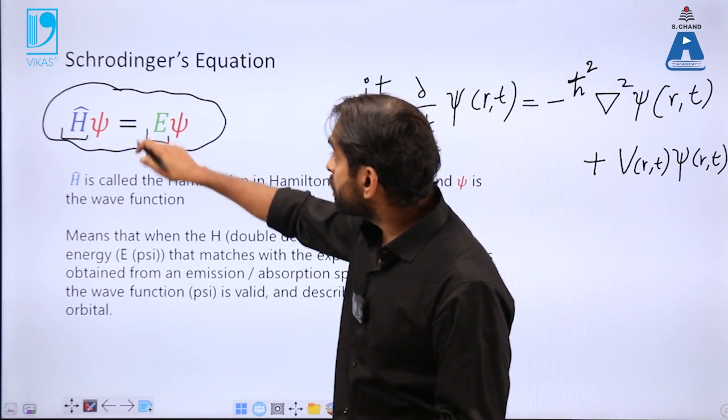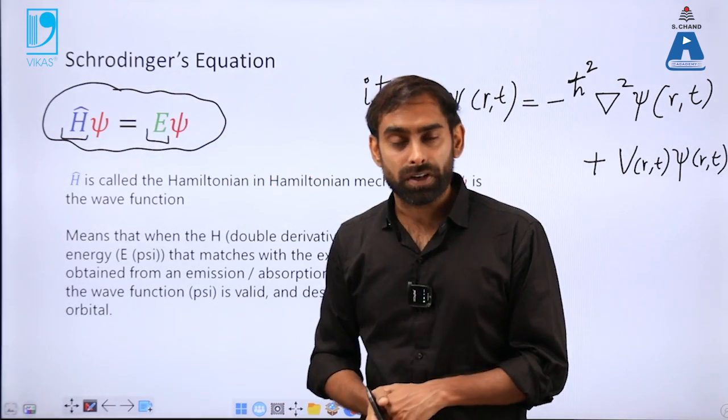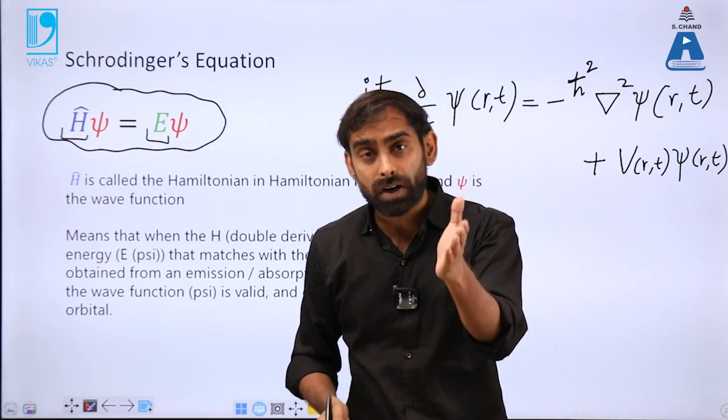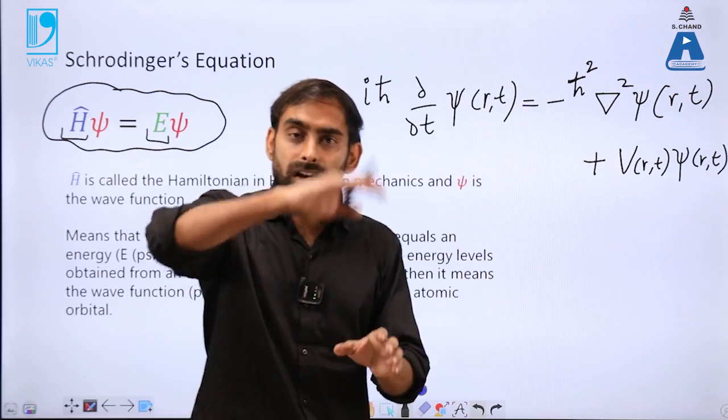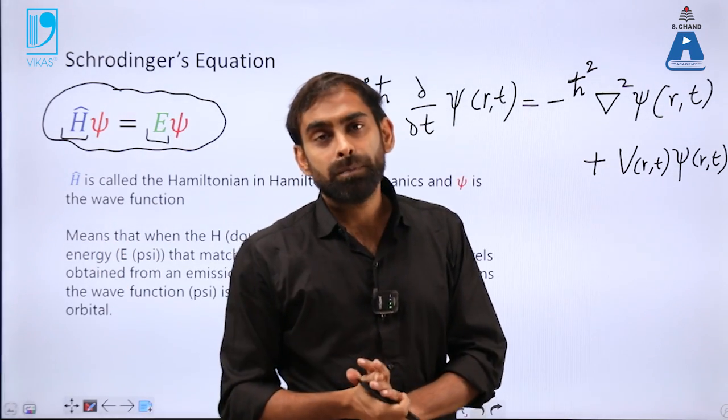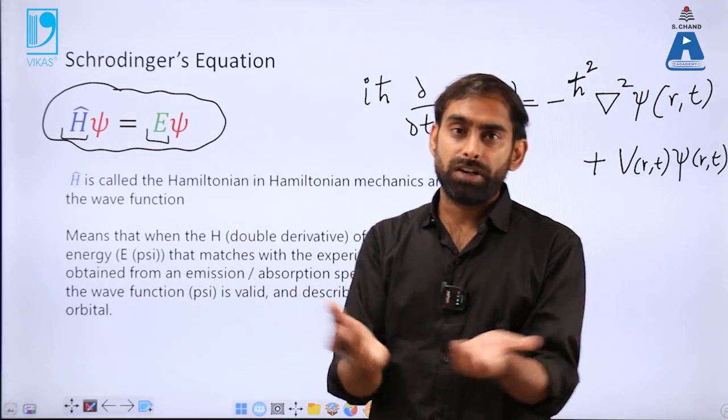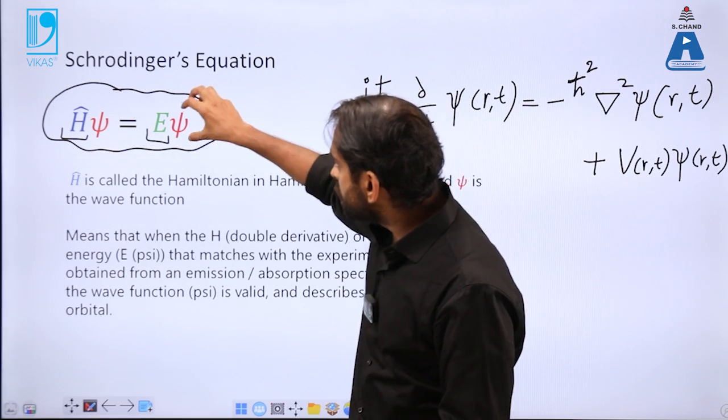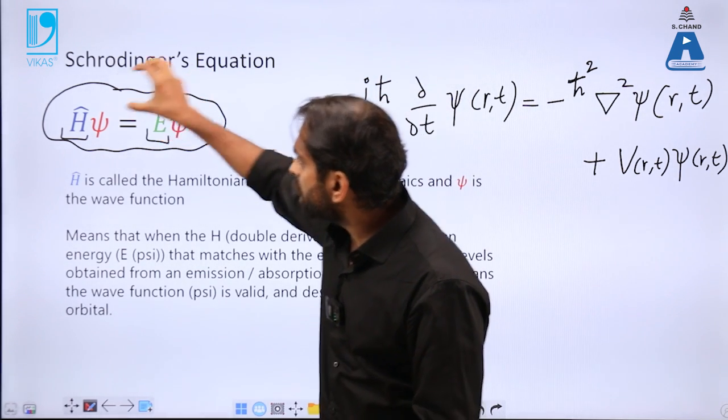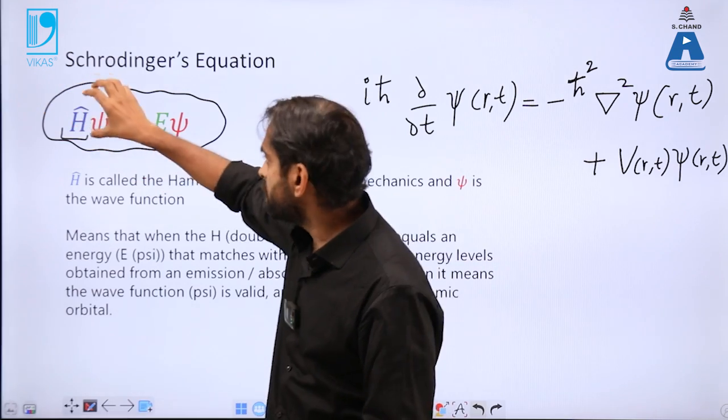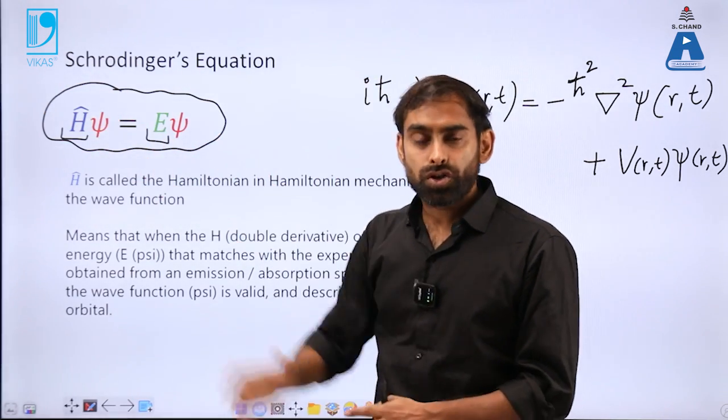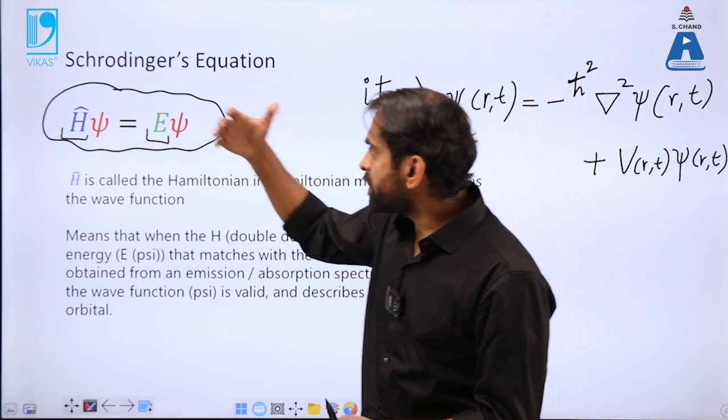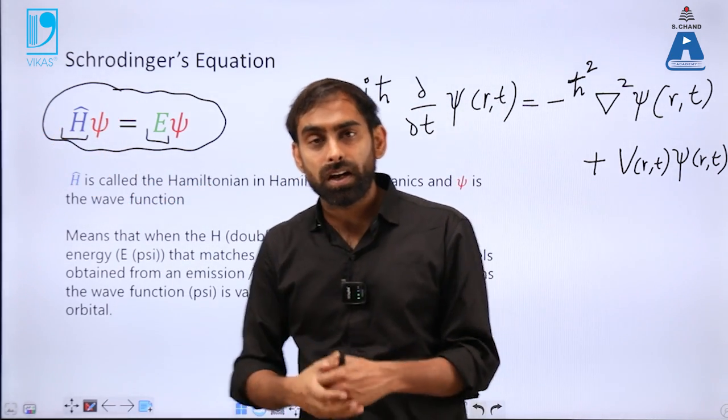This Hamiltonian operator, when multiplied with wave function, is actually equal to the calculated energy multiplied with wave function. Wave function is defining the properties of waves of electrons spinning around the nucleus in the form of a complete wave. So how complete wave and its energy is related to a Hamiltonian operator multiplied with wave function—that was the whole idea of Schrödinger's equation.